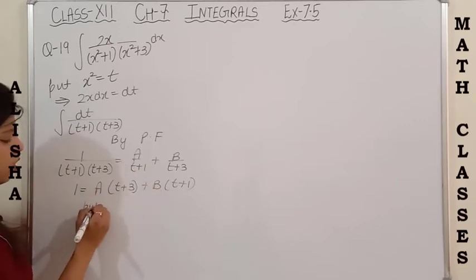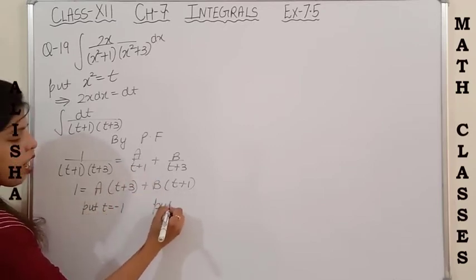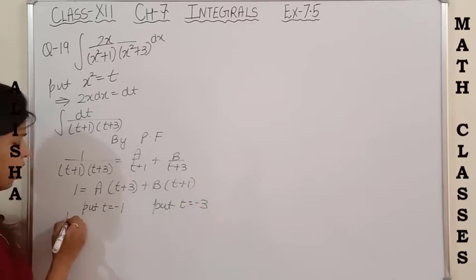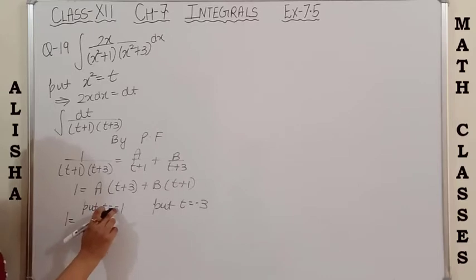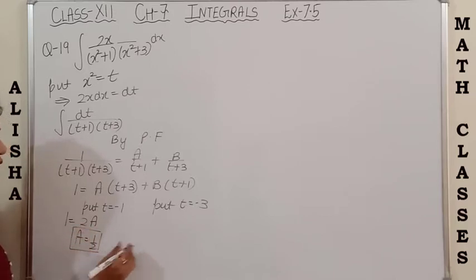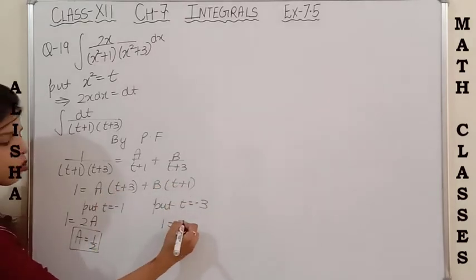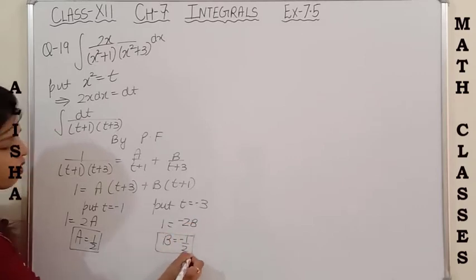We put t+1=0 so t=−1, and t+3=0 so t=−3. The left-hand side is independent of t, so it remains 1. Putting t=−1: (−1+3)=2, so 2A=1, giving A=1/2. Putting t=−3: (−3+1)=−2, so 1=−2B, giving B=−1/2.